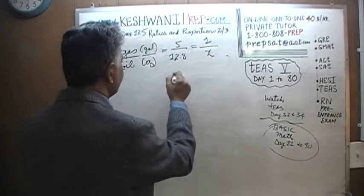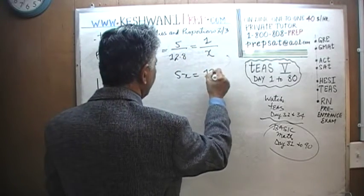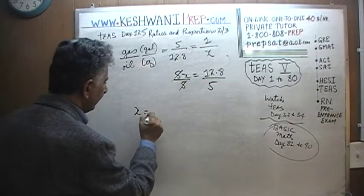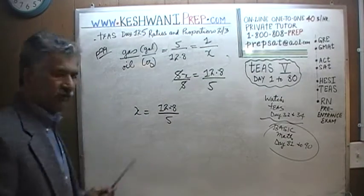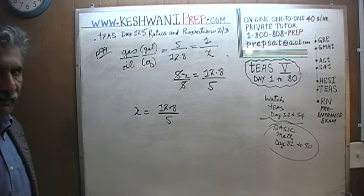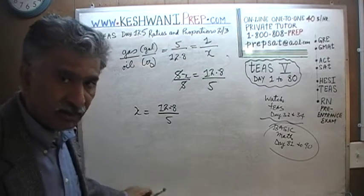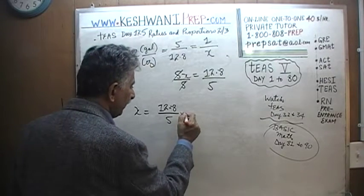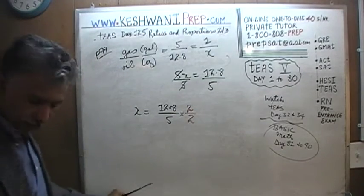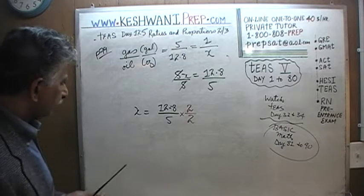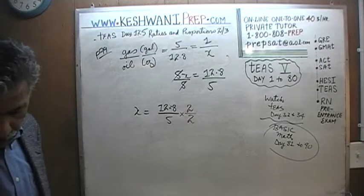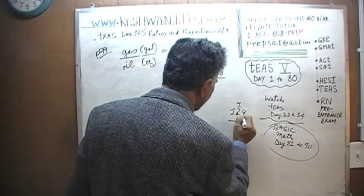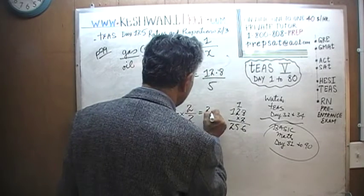Cross multiply: 5 times x equals 5x, and 12.8 times 1 equals 12.8. Divide both sides by 5 and we are done — 5 cancels out and x equals 12.8 over 5. To make life easier, there is a trick: convert the denominator 5 into 10 by multiplying top and bottom by 2. So 12.8 times 2 over 5 times 2.